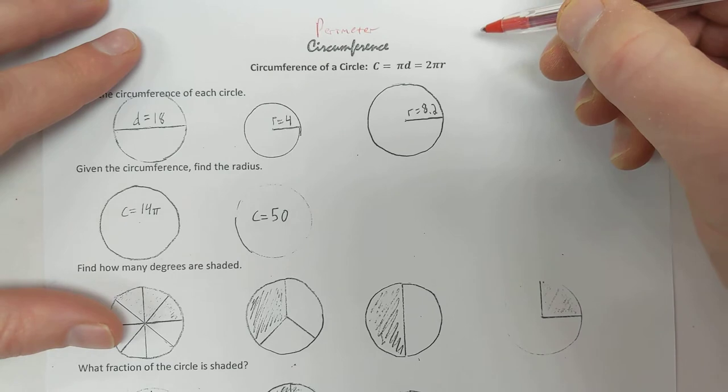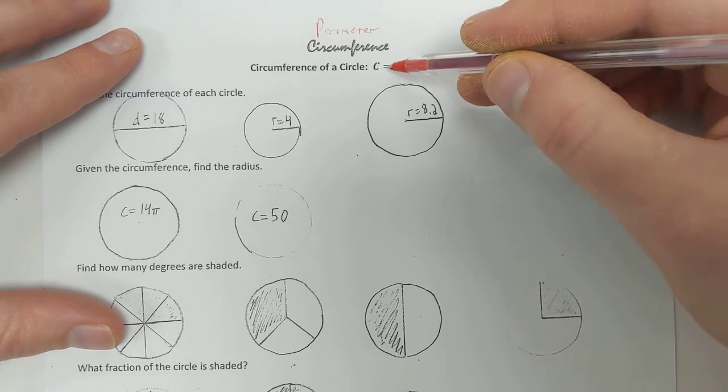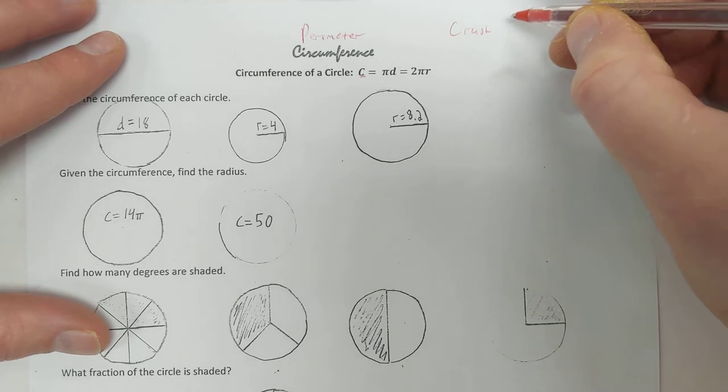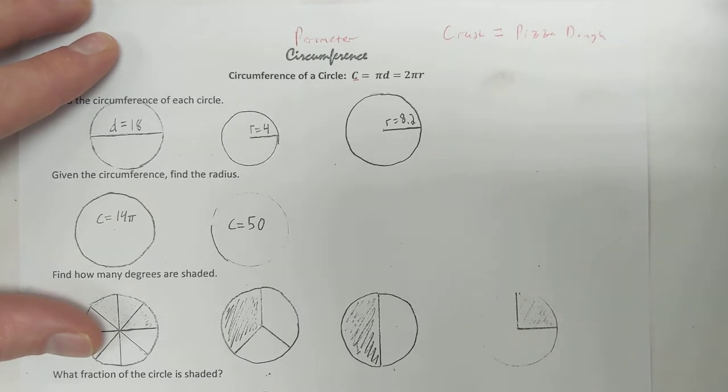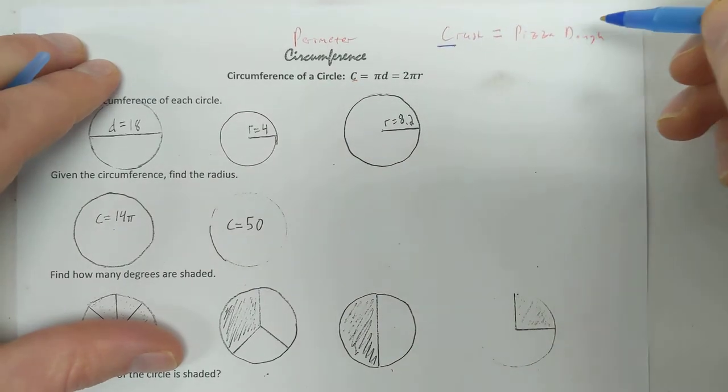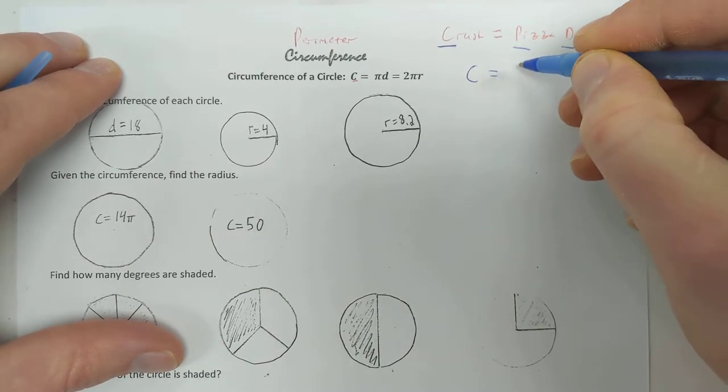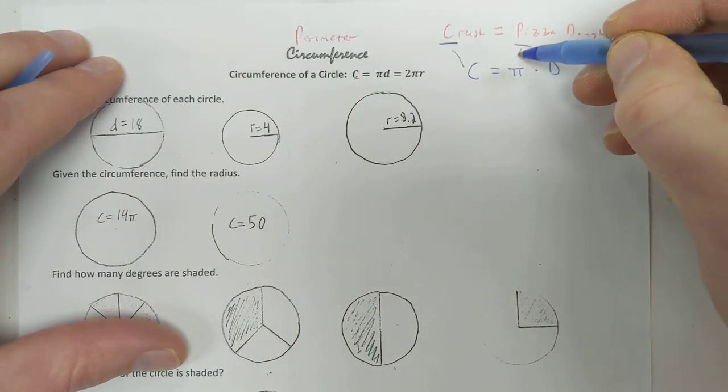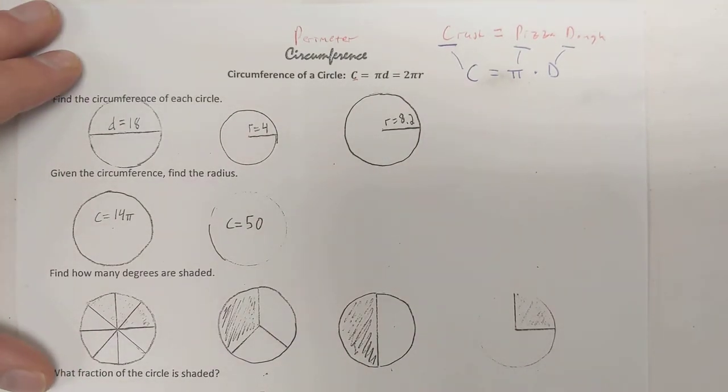Now, personally, I always had trouble remembering which formula is area and which formula is circumference. And then I learned this neat trick. Circumference is like the crust of a pizza, and crust is made of pizza dough. The crust, the distance around the pizza, is made of pizza dough. So C is equal to pi times D. The crust is made of pi dough. Yes, it is silly, and yes, that's going to be helpful to you and that's going to work.